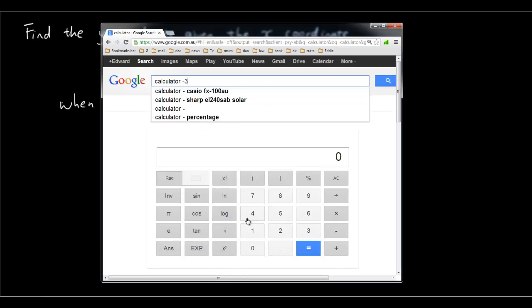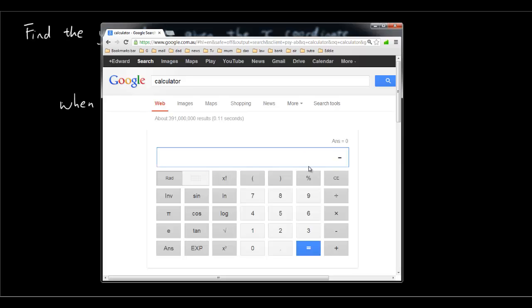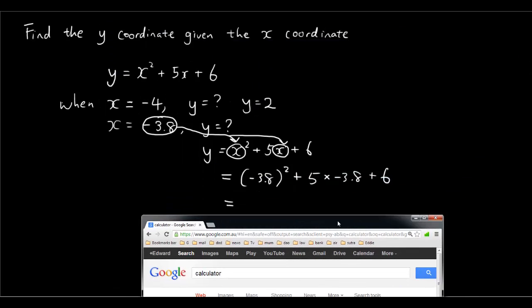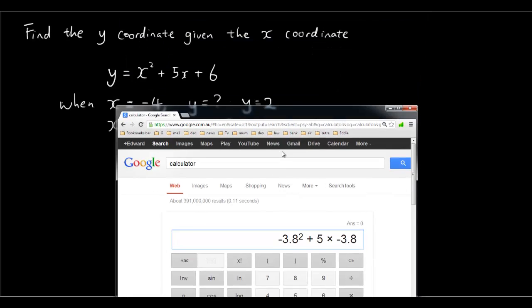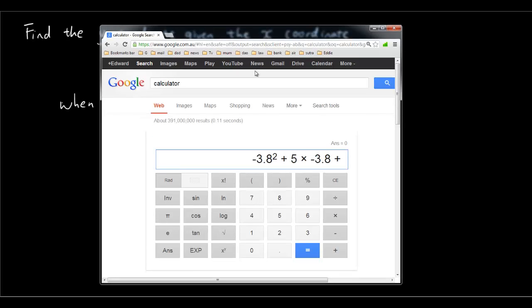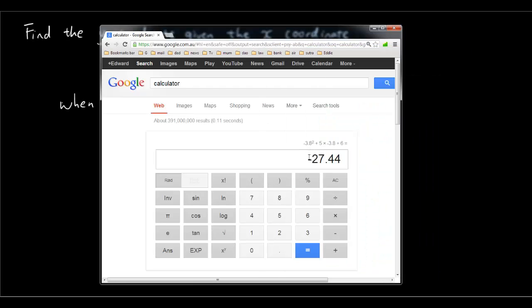So negative 3.8, my calculator. So negative 3.8 squared, plus 5 times negative 3.8, and plus 6. So the answer is negative twenty seven point four four. You can probably tell that's not right straight away from the graph. So that is because something went wrong with our calculation.